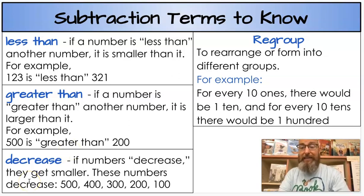Then we have the word decrease. If numbers decrease they get smaller. These numbers decrease: 500, 400, 300, 200, 100. They get smaller as they go and so they decrease. When you subtract the answer is smaller than the minuend, so that number has decreased.